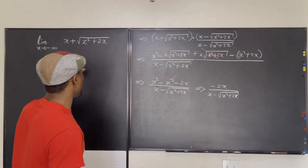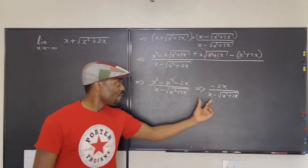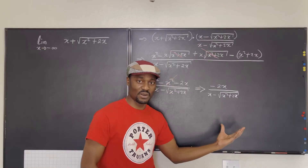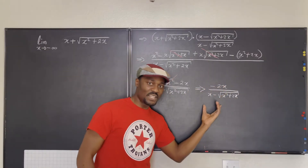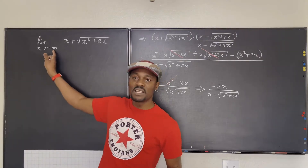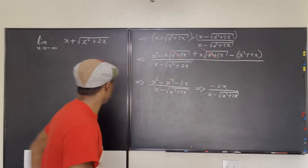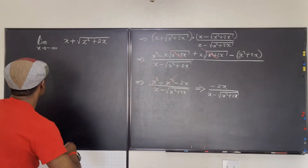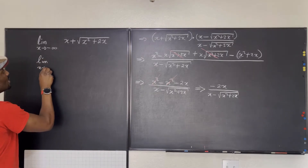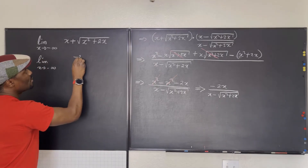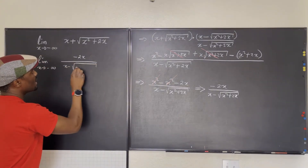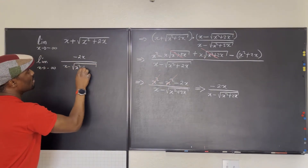We need to take this and write it back into the limit, because that's the limit we're about to take. Now we're no longer subtracting two terms — we have a single term with a numerator and a denominator, which is easier to work with when dealing with infinity or negative infinity. So we have the limit as x goes to negative infinity of negative 2x over x minus radical (x² + 2x).